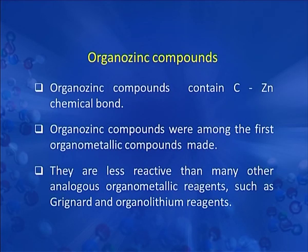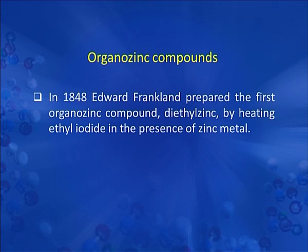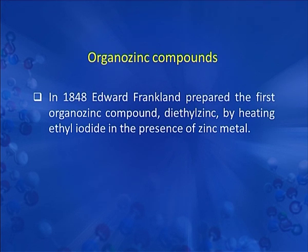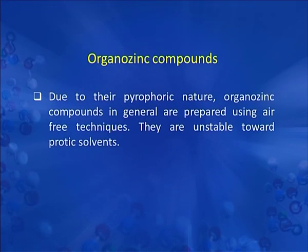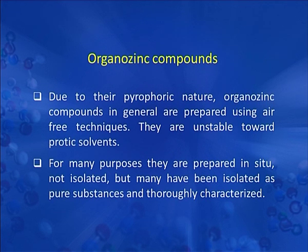Organozinc compounds contain a carbon-zinc chemical bond. They were among the first organometallic compounds prepared. In 1848, Edward Frankland prepared the first organozinc compound, diethyl zinc, by heating ethyl iodide in the presence of zinc metal. This reaction produced a volatile, colorless liquid that undergoes spontaneous combustion upon contact with air. Due to their pyrophoric nature, organozinc compounds are generally prepared using air-free techniques and are unstable toward protic solvents.